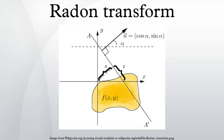Definition: let f(x) = f(x,y) be a compactly supported continuous function on R².